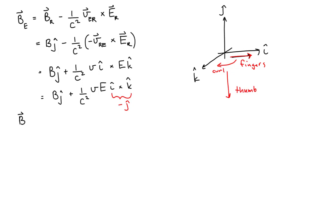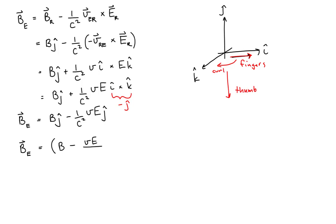This means the magnetic field observed by Earth equals the magnitude of the magnetic field observed by the rocket ship, minus 1 over c squared, times the product of the speed of the rocket ship and the magnitude of the electric field measured by the rocket ship scientists, times j-hat. Pulling the minus sign from the minus j-hat in front of the second term, this becomes B minus (v · E / c²) j-hat.